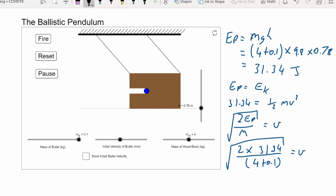So 2 times 31.34 divided by 4.1 square root, answer is about 3.909 meters per second. So that's what this velocity is. So this velocity after the collision is that.